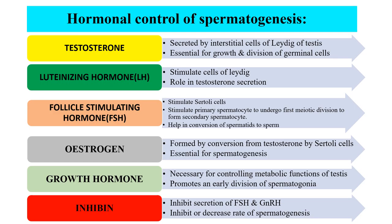In hormonal control of spermatogenesis, the first hormone is testosterone, secreted by the interstitial cells of Leydig of the testis; it is essential for growth and division of germinal cells. Luteinizing hormone stimulates the Leydig cells and plays a role in testosterone secretion. Follicle-stimulating hormone (FSH) stimulates Sertoli cells, stimulates primary spermatocytes to undergo the first meiotic division to form secondary spermatocytes, and helps in conversion of spermatids to sperm.